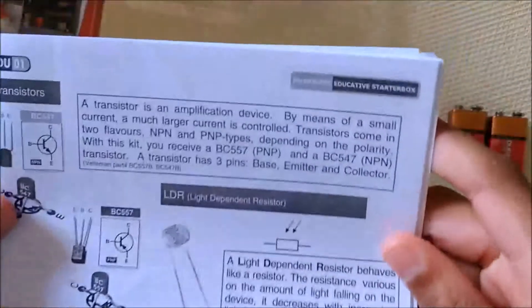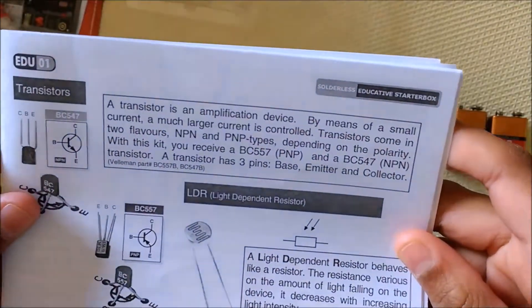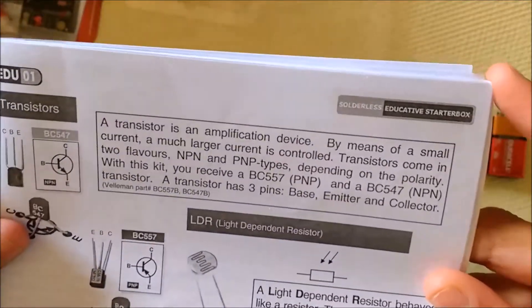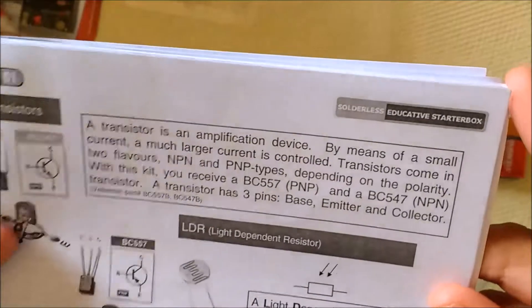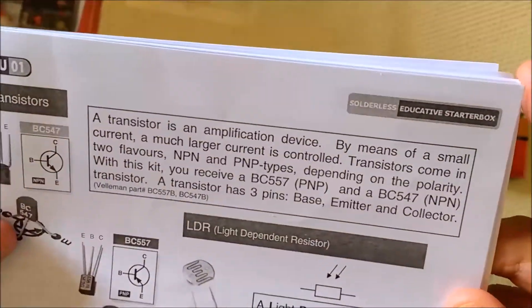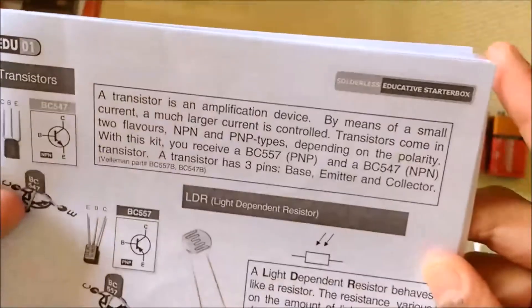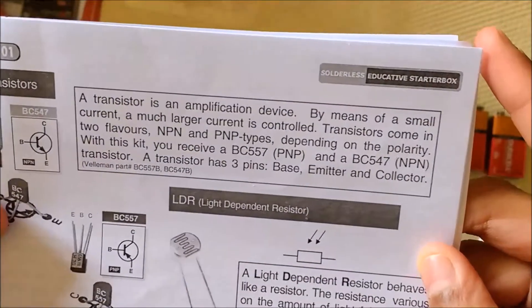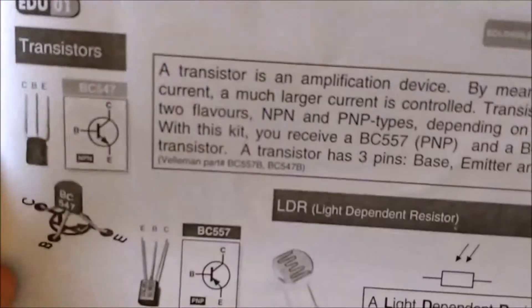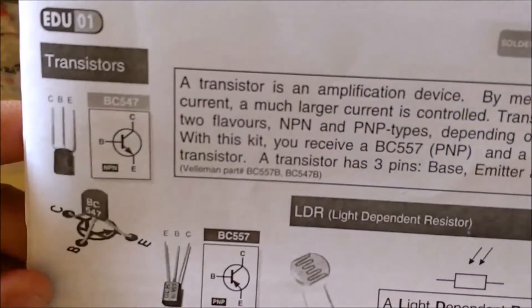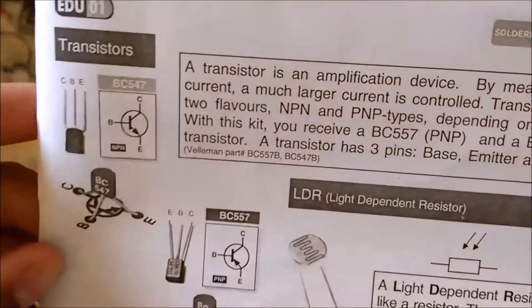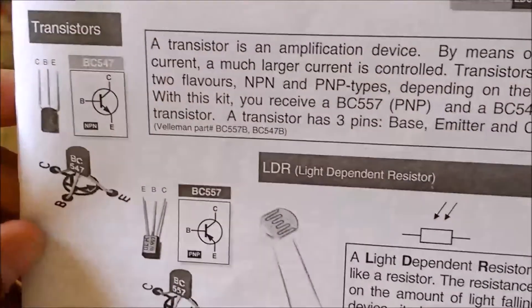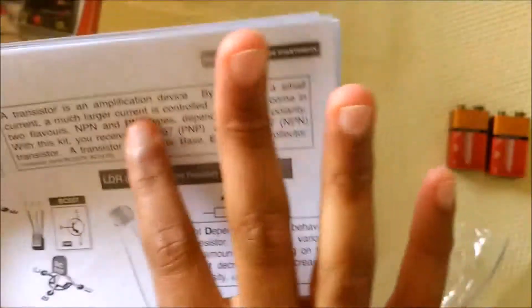Next are the transistors. A transistor is an amplification device. By means of a small current, a much larger current is controlled. Transistors come in two flavors, NPN and PNP types, depending on the polarity. With this kit you receive a BC557 PNP and a BC547 NPN transistor. A transistor has three pins: base, emitter, and collector.